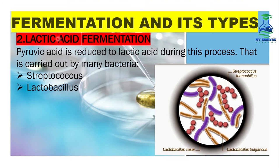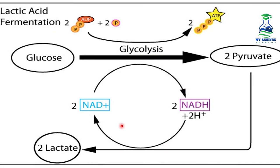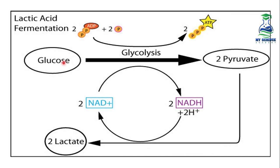Lactic acid fermentation is carried out by bacteria. Pyruvic acid is reduced to lactic acid during this process. It is carried out by many bacteria like Streptococcus and Lactobacillus. In this diagram, you can observe both types of bacteria — the round ones are Streptococcus and the rod shapes are Lactobacillus. In lactic acid fermentation, when glucose yields 2 pyruvate molecules, they are further converted into 2 lactic acid molecules by bacteria.